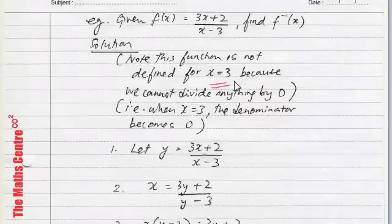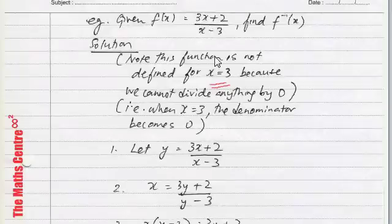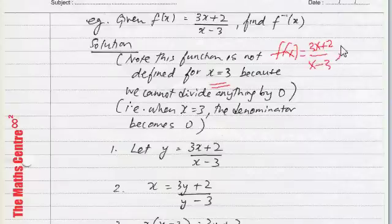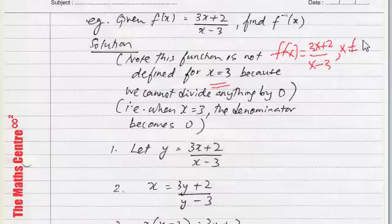Note that this function is not defined for x equals to 3. It does not exist for x equals to 3. Because when you plug in x equal to 3 in the denominator, you have to divide something by 0. And you cannot divide anything by 0. So, this function, please remember, is not defined for x equals to 3. So, people may write the function like this in books. 3x plus 2 over x minus 3. And then they'll say x cannot be equals to 3.